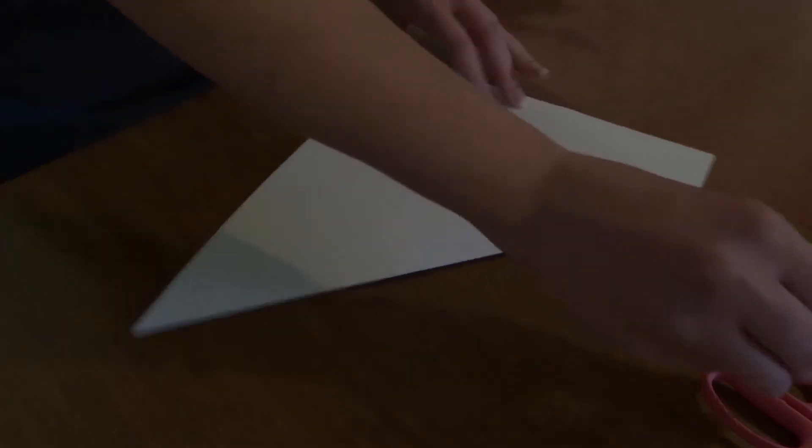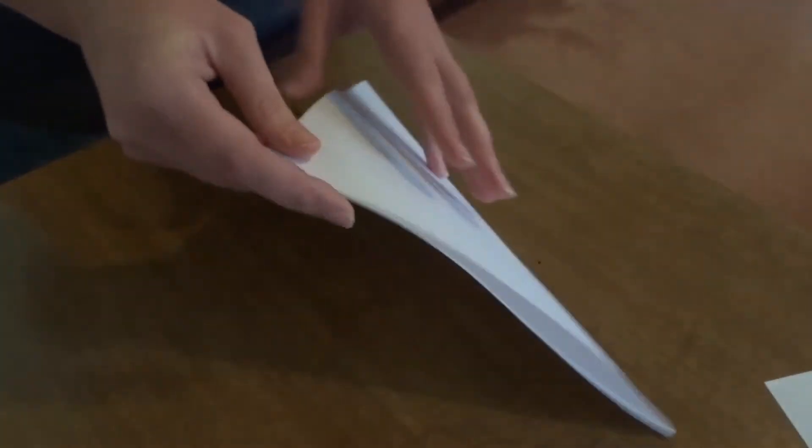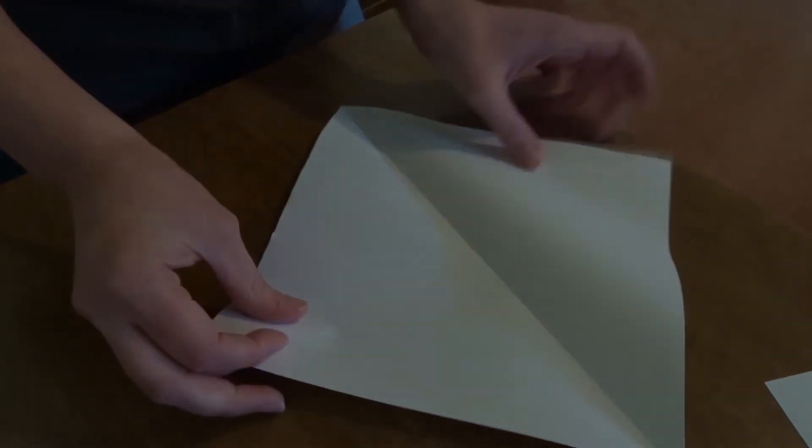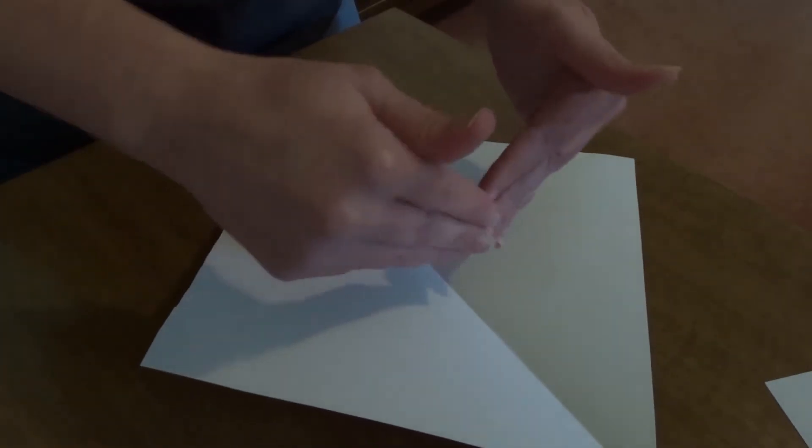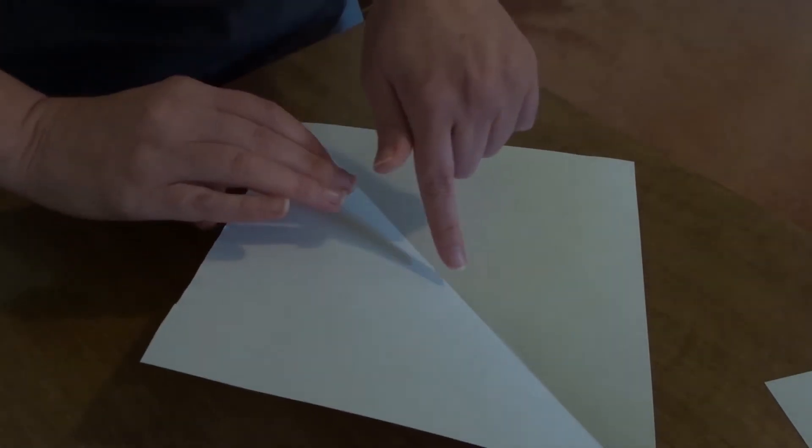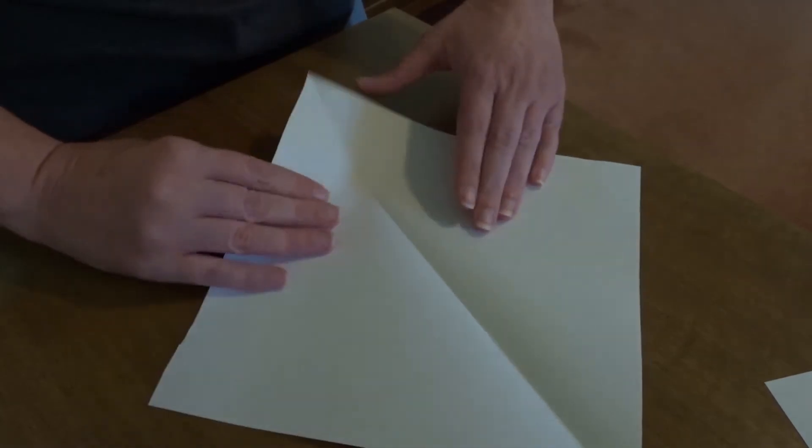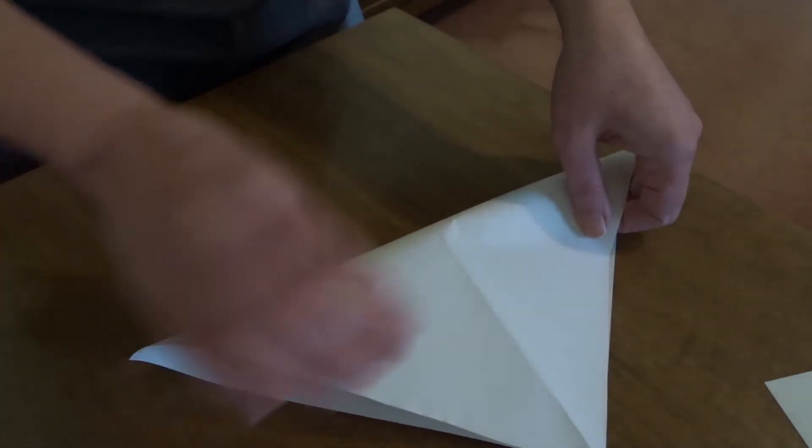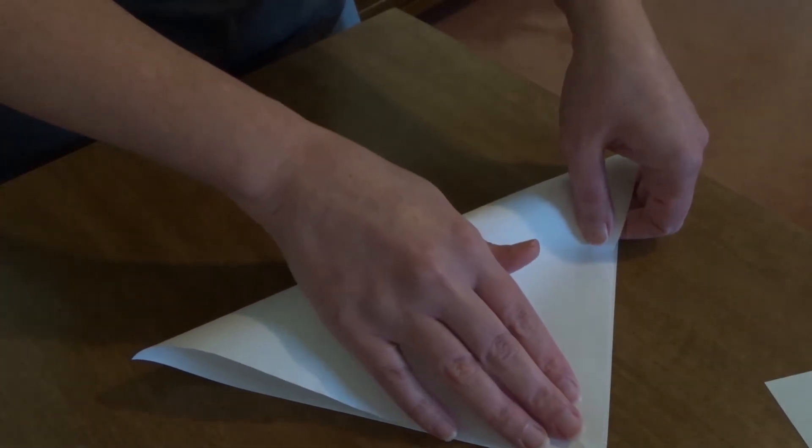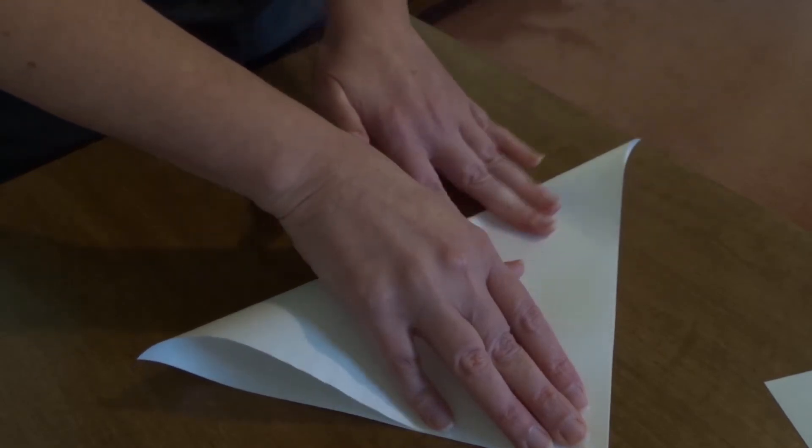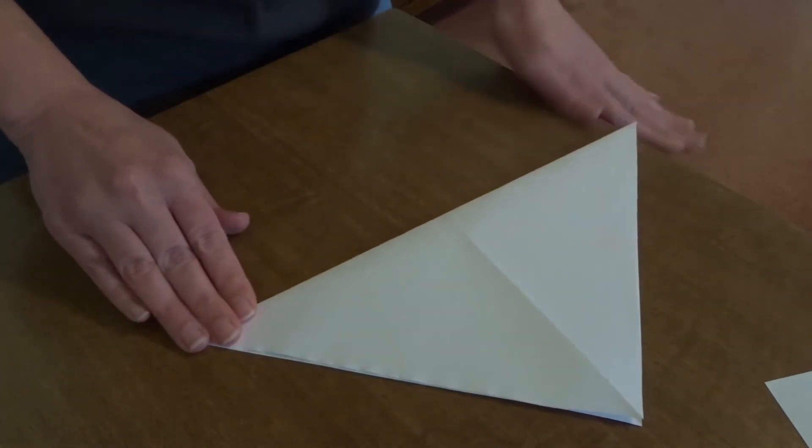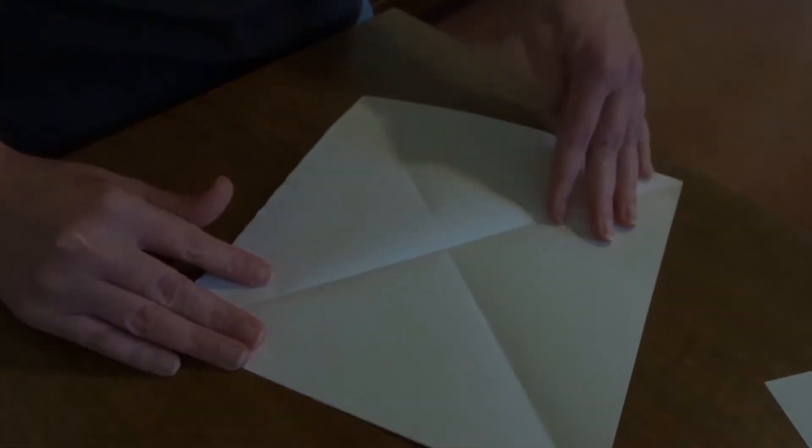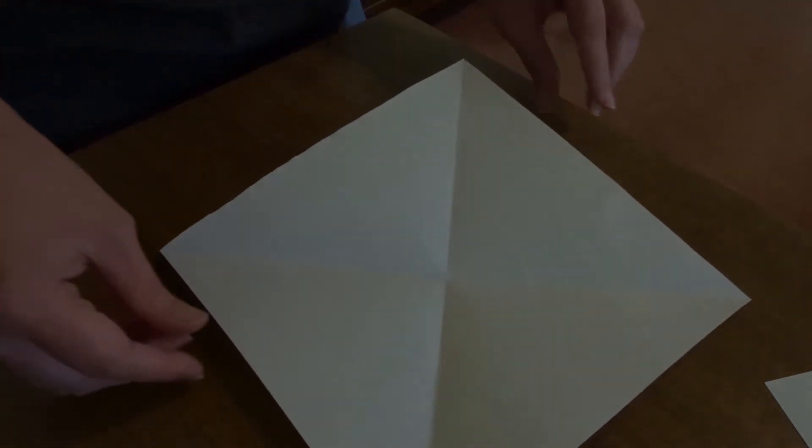Then we open that back up, and we've got a line this way. We actually want a line this way as well, so that we can tell where the center of this is. It helps a lot to know where the center is as we go through the rest. So we fold it in half and get another triangle, and when we open it up, we have an X that marks the spot.